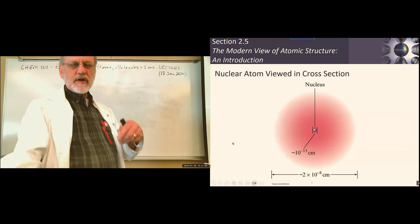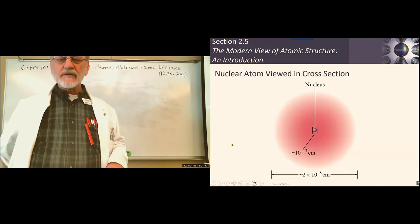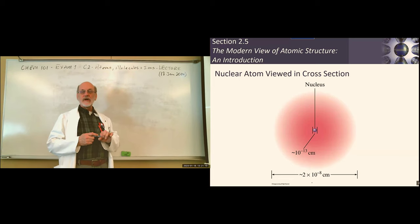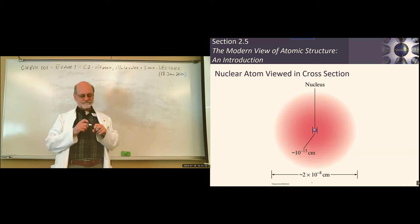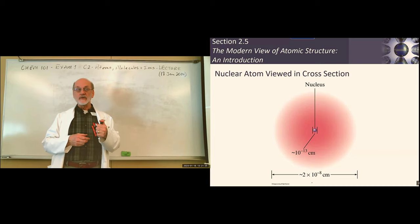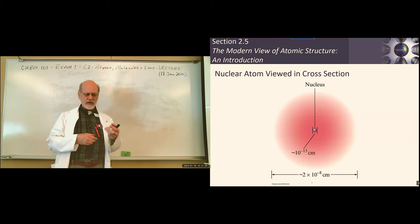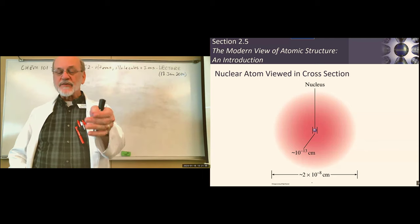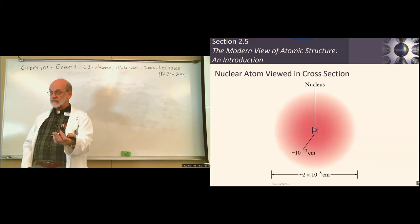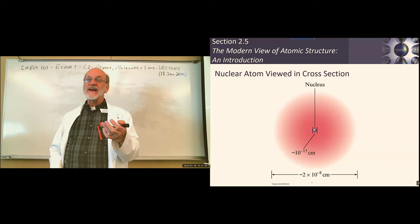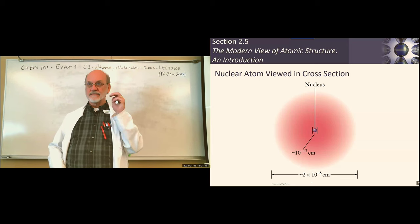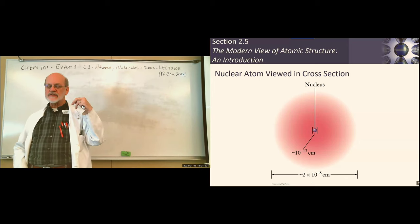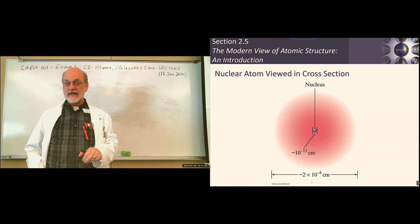The illustration shows the difference in size between the nucleus and the atom. Have you heard the expression 'orders of magnitude'? Orders of magnitude refers to powers of 10. The difference from 10⁻¹³ to 10⁻⁸ is five orders of magnitude — five powers of 10. So the size of the atom is five orders of magnitude larger than the nucleus — that's a big jump.